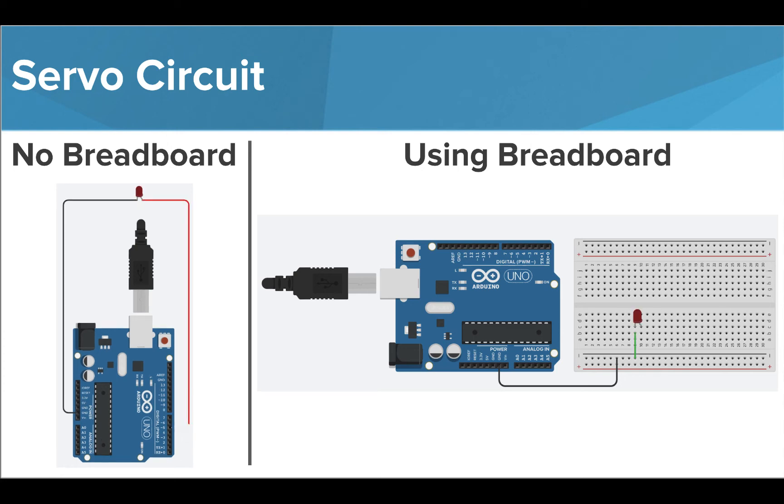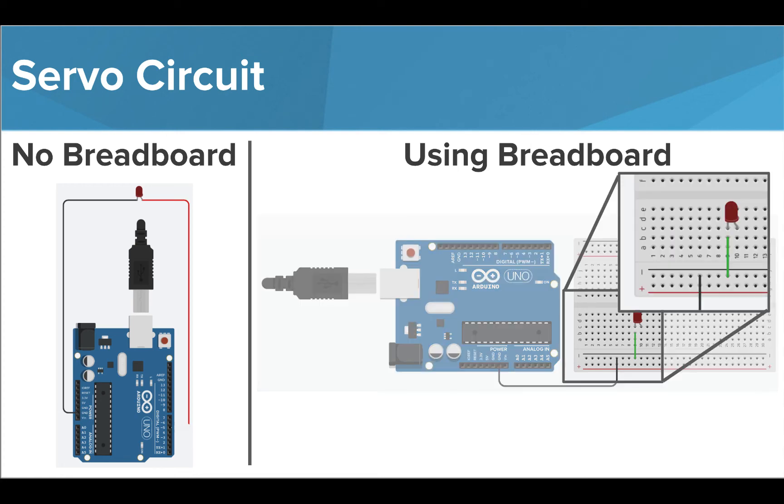We then want to form a connection from the ground to the short leg of our LED. To do this, we use a jumper wire to bring the connection from any port in the negative bottom strip to any port we choose in the grid section of our breadboard. Let's just say that we connect this wire to port 9b as shown here.